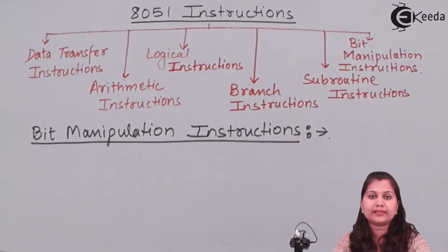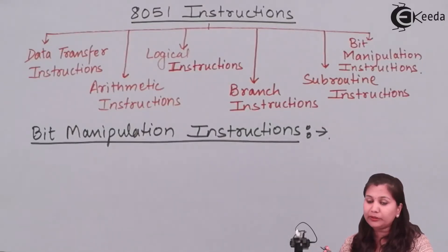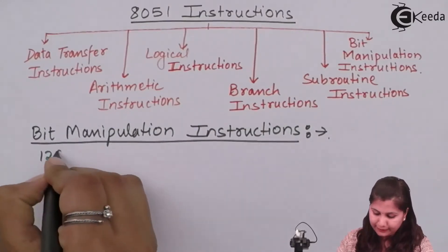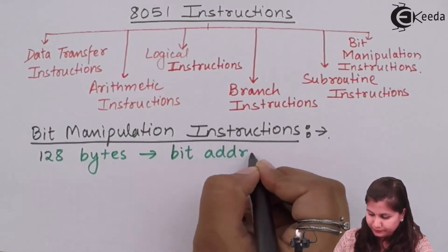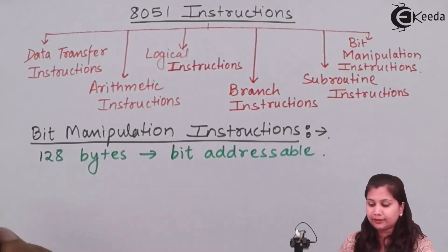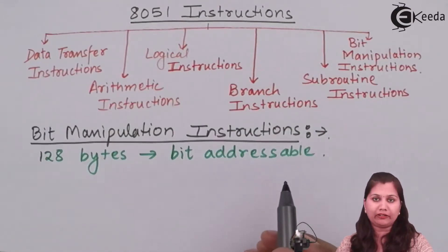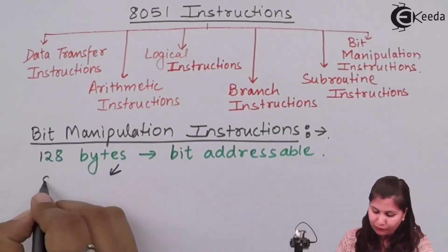In the 8051 microcontroller, its complete memory is divided into two parts. One is the program memory and the second is the data memory. In the program memory we write the programs, and the data memory stores all the data. The program memory is of 64 kilobytes. Out of this program memory, we have 128 bytes which are bit addressable, meaning those memory locations have bit addresses.